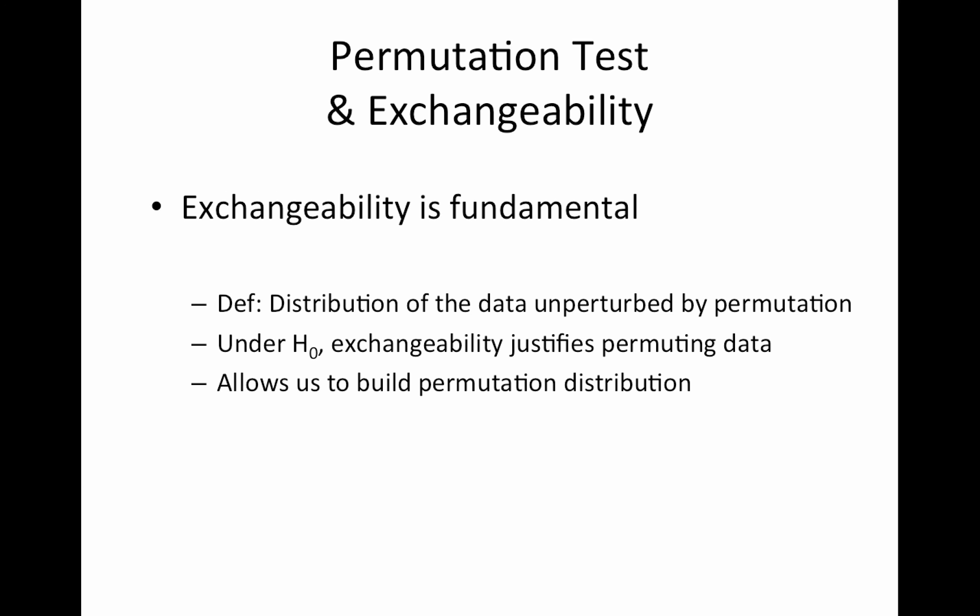The one assumption that's incredibly important is the assumption of exchangeability. Exchangeability means that when we do this label reshuffling we're not changing the distribution of the data. So other things about the distribution that we're not specifically testing. So under the null, exchangeability justifies permuting the data and allows us to build this permutation distribution.